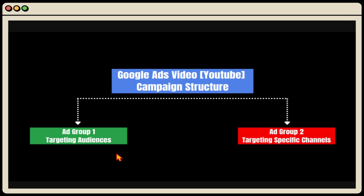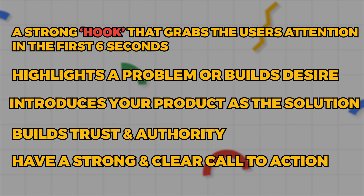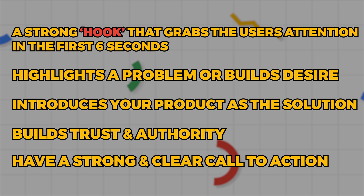There are other times where I've run this as two separate campaigns — one general campaign targeting audiences and channels by interest, and a second campaign targeting those specific channels. One of the core benefits of that is you're able to better control the budgets and spending between the two ad groups. So now that we've gone through the overview of the five core elements and the simple campaign structure, it's time to take you through the step-by-step process of setting up a video campaign.